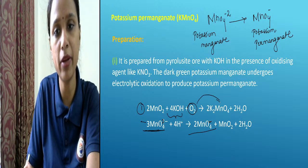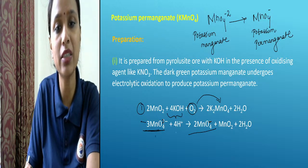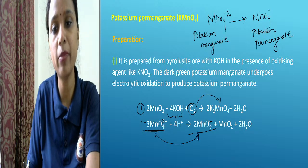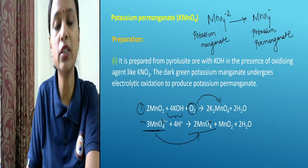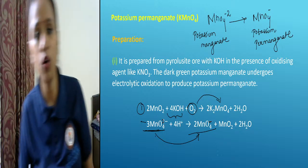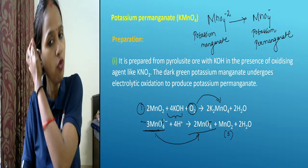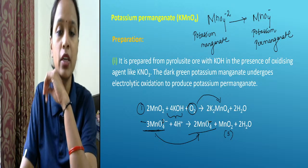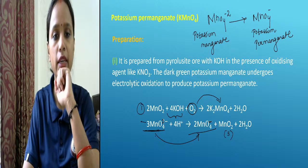This preparation is done in two steps. In step one, pyrolusite ore is treated with alkali and excess of oxygen to give potassium manganate. In step two, potassium manganate is treated to give potassium permanganate. Along with this, some amount of manganese oxide (solid) and water are also released.